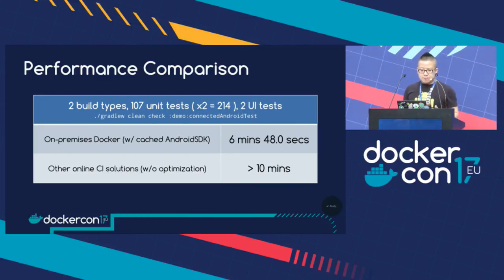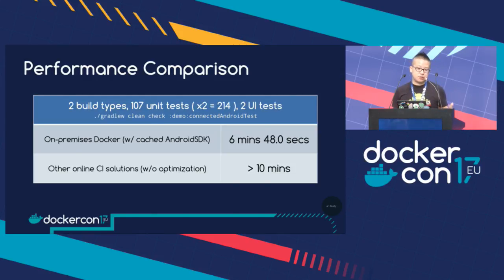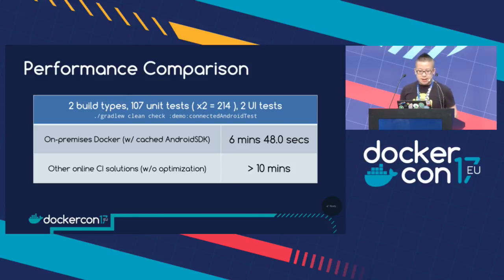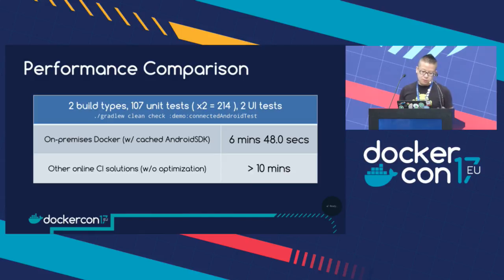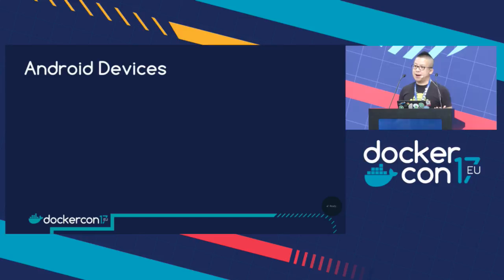For an on-premises versus cloud CI comparison, I used a sample project with two build types — debug and release — with over 100 unit tests and 2 UI tests. With the on-premises solution using a cached Android SDK from the NFS drive and without any optimization, it's roughly six minutes. Other online CI solutions are mostly over 10 minutes, also without optimization. The UI tests are the slowest part in daily Android CI jobs.